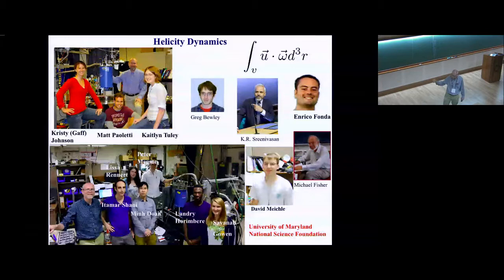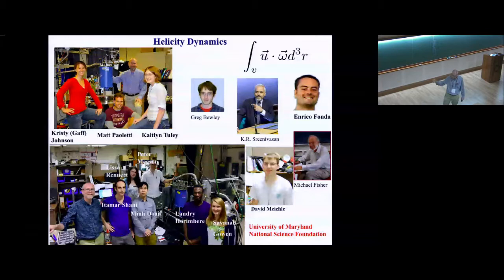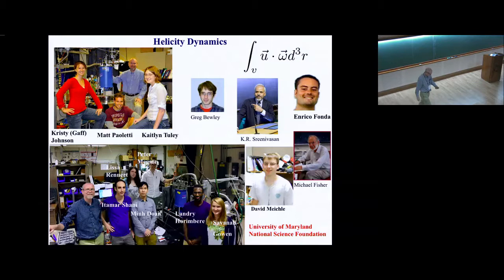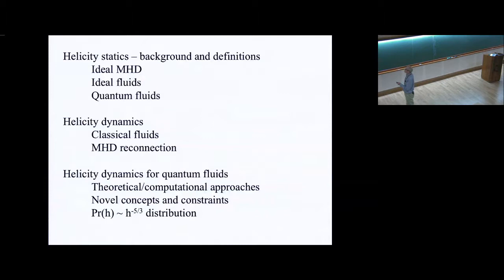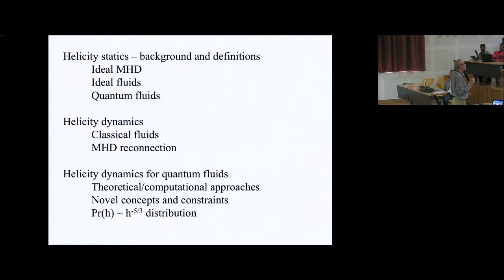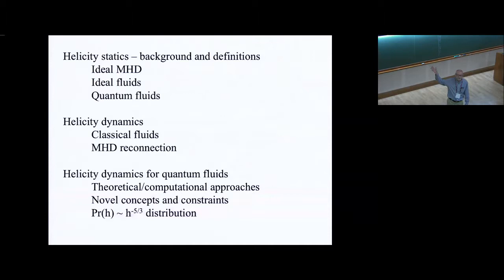So this helicity is associated with the right-hand rule in a way that if you change the right-hand rule to the left-hand rule, you'll actually change the sign of the helicity in the same way that you would change the sign of the vorticity, being a pseudovector. We're going to dwell on this in some length. I want to talk about helicity statics to start with, definitions, and the sort of invariants that come out.